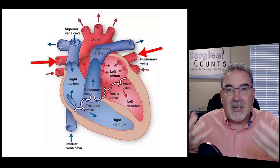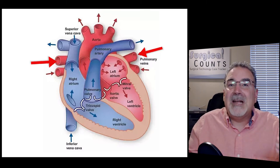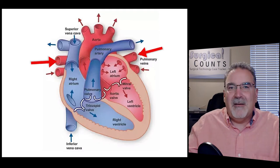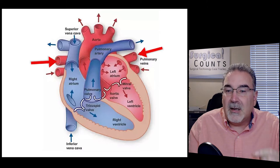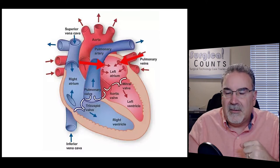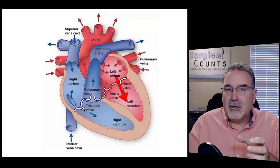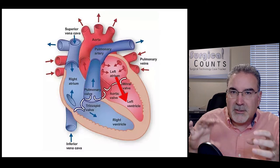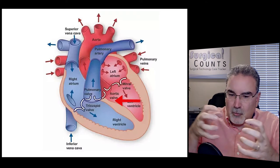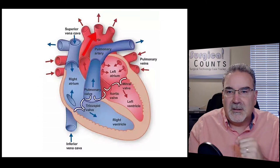Once the blood passes through the lungs and becomes oxygenated, it enters the heart through the pulmonary veins - shown in red because the blood is now oxygenated. It enters through the left atrium via four pulmonary veins. The left atrium pumps the blood through the mitral valve (the bicuspid valve) into the left ventricle. The left ventricle has the biggest muscle of the four chambers because it's sending blood to the rest of the body. When the left ventricle squeezes down, it puts a lot of pressure on the blood, sending it into the aorta and out to the rest of the body.